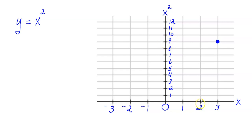2 squared is 4, and 1 squared is 1. 0 squared is just 0.